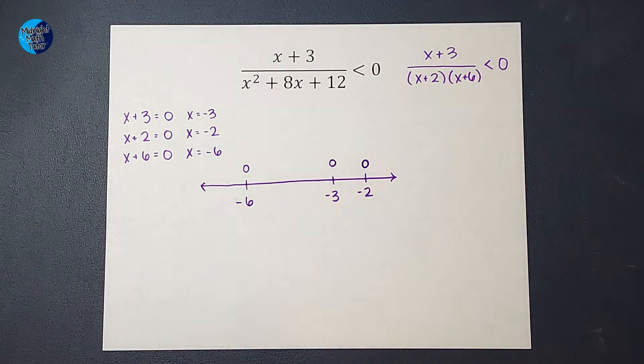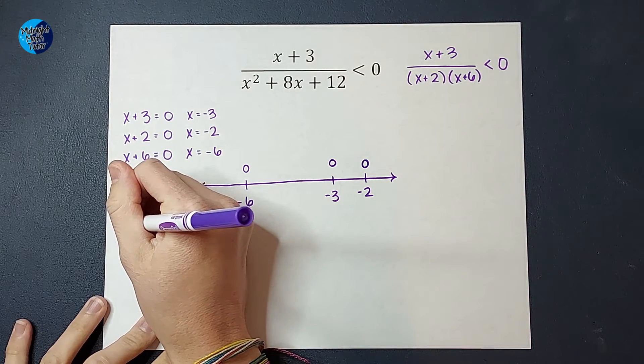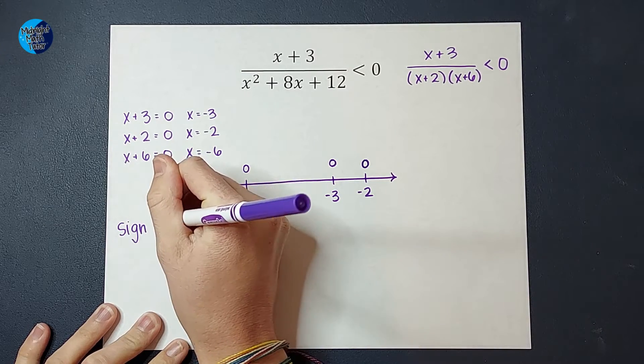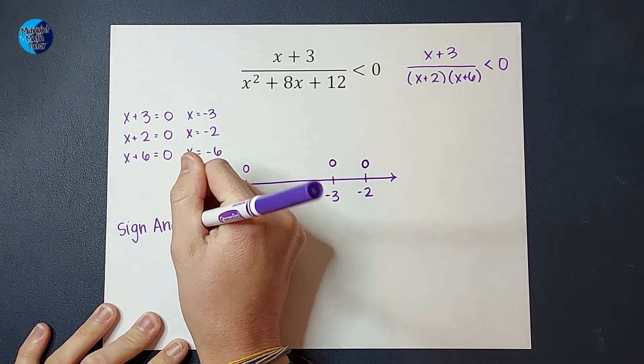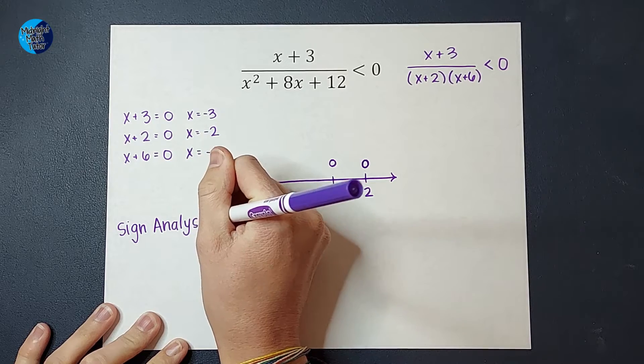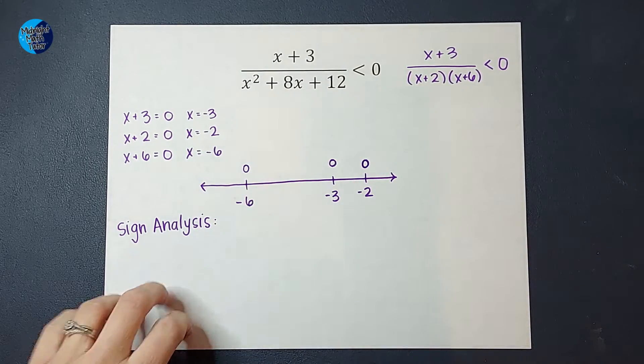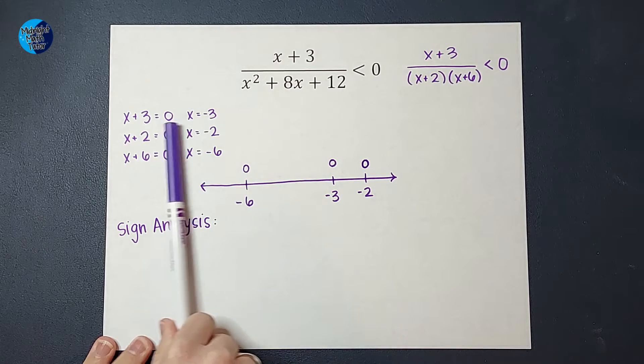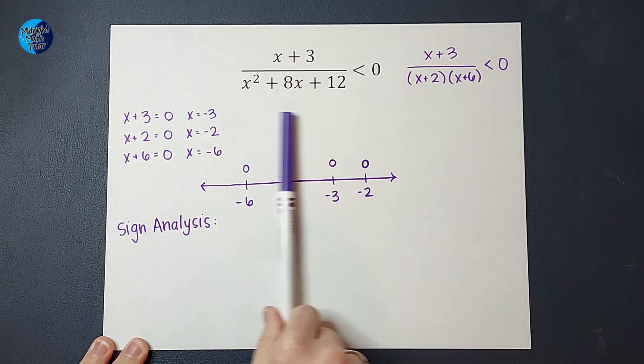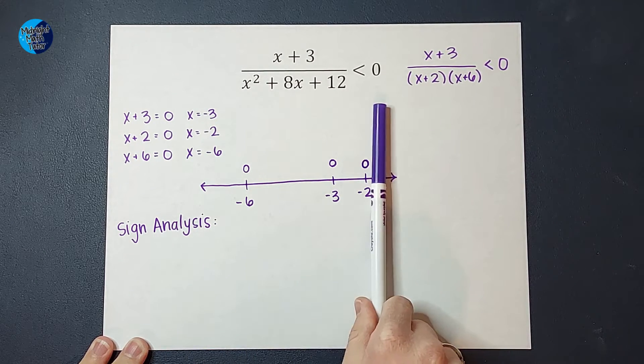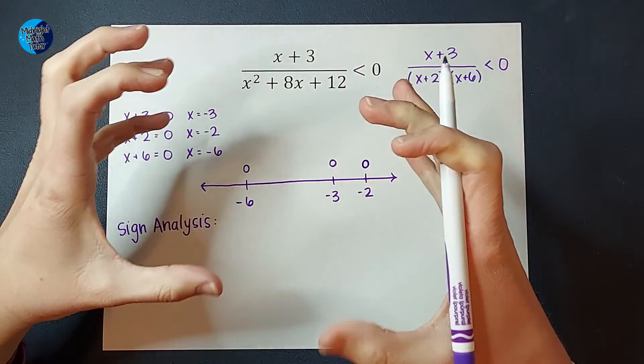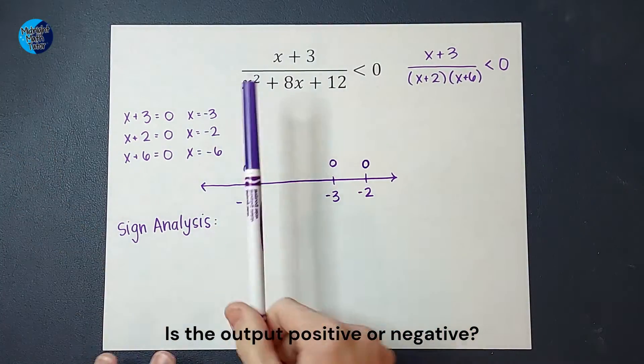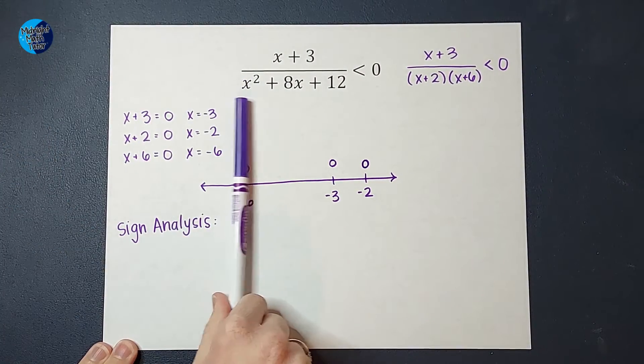All right, from here, we are going to do what is called sign analysis. And you may have done this before. If not, or if you have, we're going to do it right now. So what we're going to do is we want to know for each of these regions, to the left of negative 6, in between these two, in between these two, and to the right of negative 2, is it positive or negative? So all I'm going to do is I'm going to pick any point to the left of negative 6.